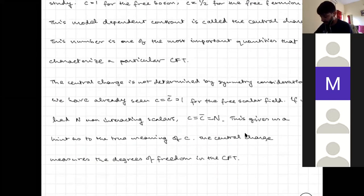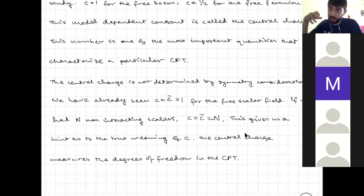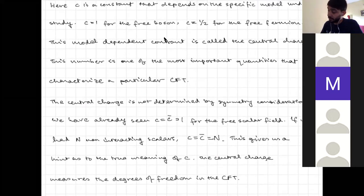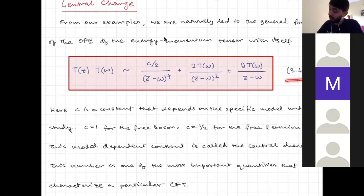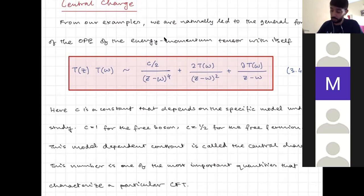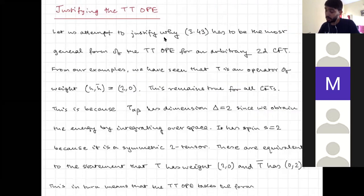We will see the central charge arise explicitly when computing the entropy of a CFT. The TT OPE (equation 3.43) is very important: it has the c/2 · 1/(z−ω)⁴ piece multiplied by the central charge, plus the usual pieces reflecting that T has weight (2,0).